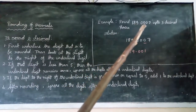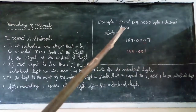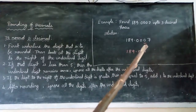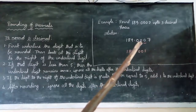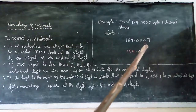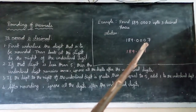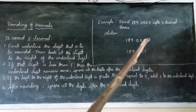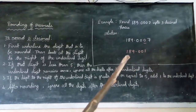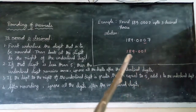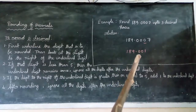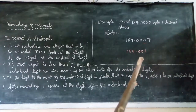Round 189.0007 to 3 decimal places. Three decimal places means we go to the thousandths place — the third digit after the decimal point. Underline that digit. The right-side digit is 7, which is more than 5, so we add 1 to the underlined digit: 0 plus 1 is 1. The answer is 189.001.